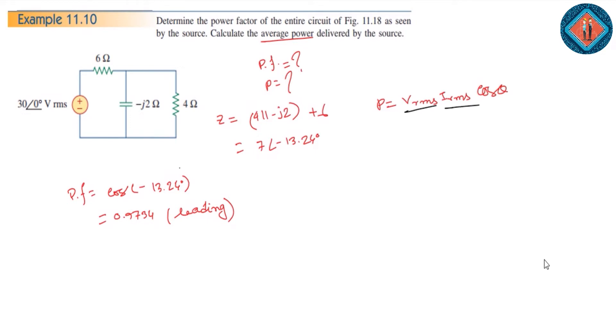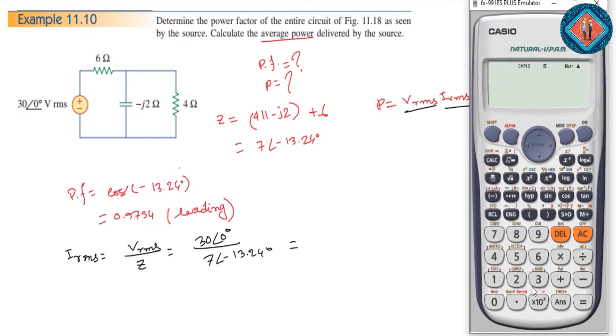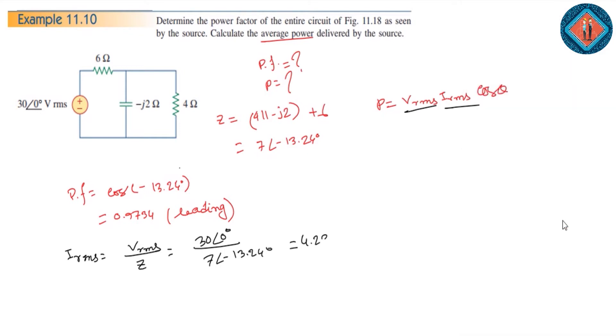To find the current, we use I_rms equals V_rms divided by Z. That's 30 at angle 0 degrees divided by 7 at angle minus 13.24 degrees, which gives us 4.286 at angle minus 13.24 degrees. This is our RMS current.